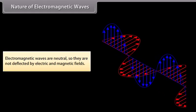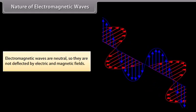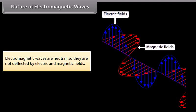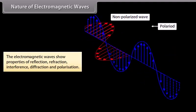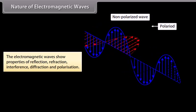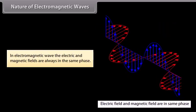Nature of electromagnetic waves. Electromagnetic waves are neutral, so they are not deflected by electric and magnetic fields. The electromagnetic waves show properties of reflection, refraction, interference, diffraction and polarization.